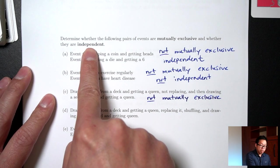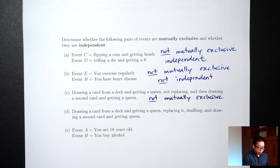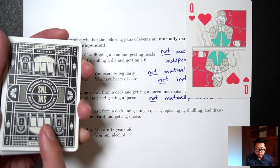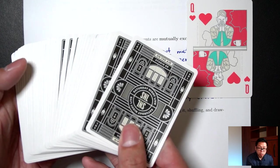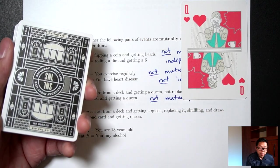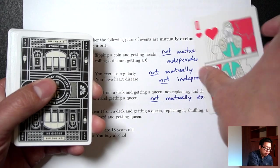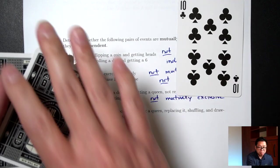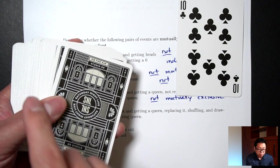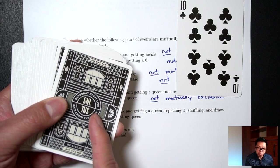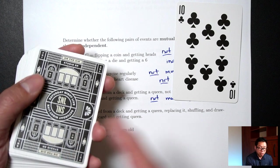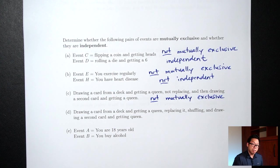Are these two draws independent? If you draw a card and don't put it back, does that first draw affect what happens for the second draw? Yes, it does. There are four queens in a deck. If the first card is a queen, there are only three queens left for the second draw. If the first card is not a queen — say a 10 — there are still four queens left. So knowing what happens on the first draw affects the probability of getting a queen on the second draw. Because they do affect each other, this is not independent.